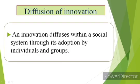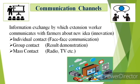An innovation diffuses within a social system through its adoption by individuals and groups — that is called diffusion of innovation. The second element of diffusion is communication channel. Communication channel is the means by which an extension worker communicates with farmers about new ideas. For effective communication, there are different kinds of extension teaching methods: individual contact, group contact, and mass contact.